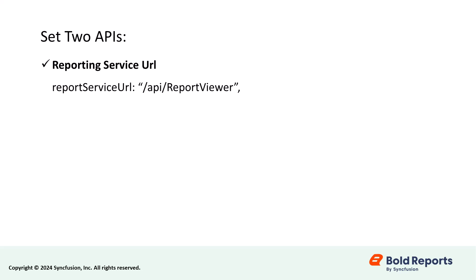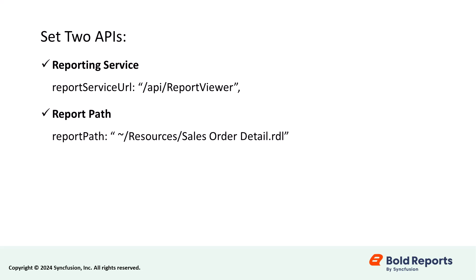You will need to set two API properties to render RDL reports in the Blazor application. The Reporting Service URL API is used to interact with server-side report processing, and the Report Path API sets the path of the report to be rendered.